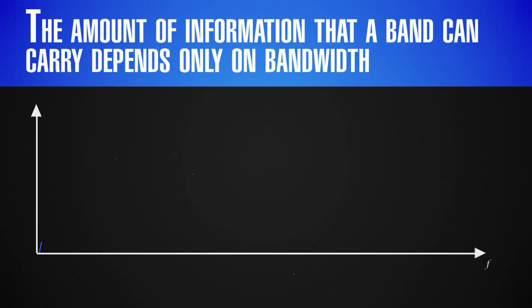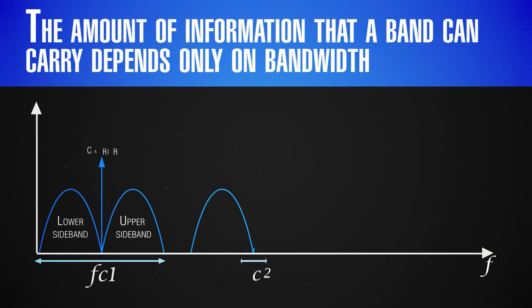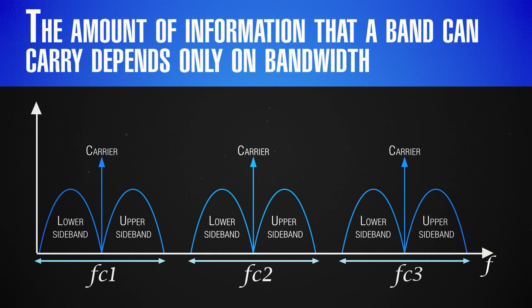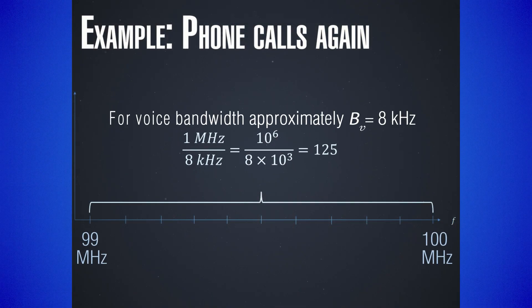Now let me give you an example. Any band of a given width can carry the same amount of information regardless of where it is in the frequency spectrum. This is perhaps the most important result which allows us to transmit information with any wavelength we desire — the same portion of the spectrum can carry the same amount of information. The human voice is in the range of 0 to 8 kilohertz, so to make a phone call you need 8 kilohertz of bandwidth, meaning any 8 kHz wide band can carry sound.